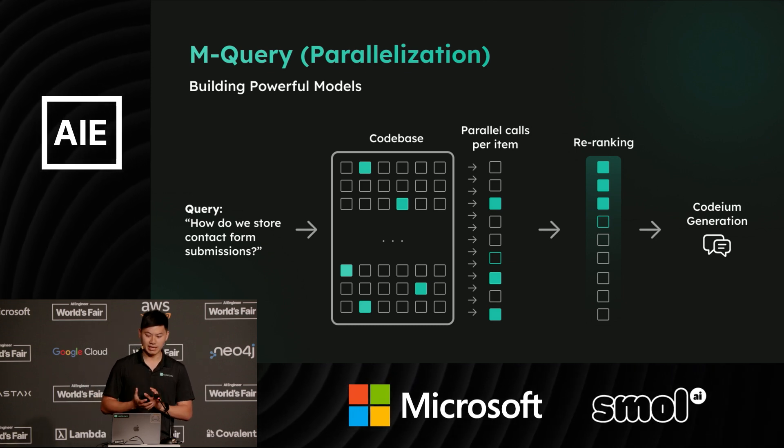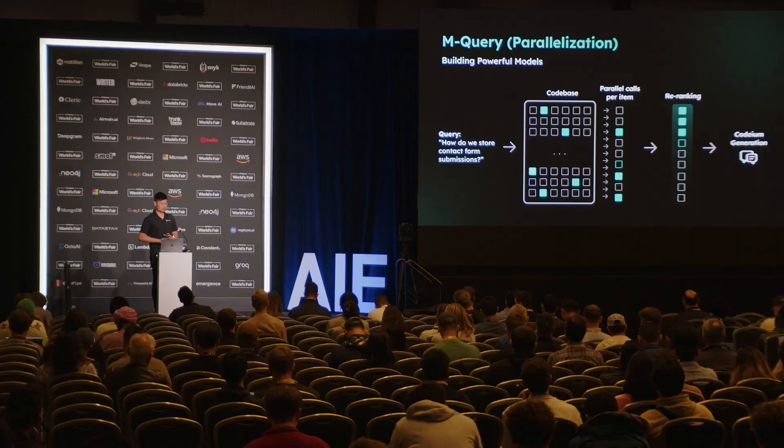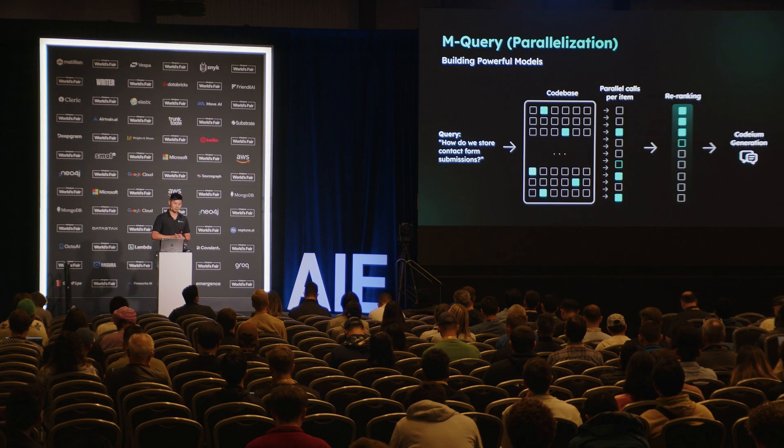The reason behind this is vertical integration — our computation is one one-hundredth of the cost of the competitors. We are not using APIs, and as a result, our customers and users actually get 100x the amount of compute they would on another product. We're willing to spend more compute per user because it leads to a better experience.